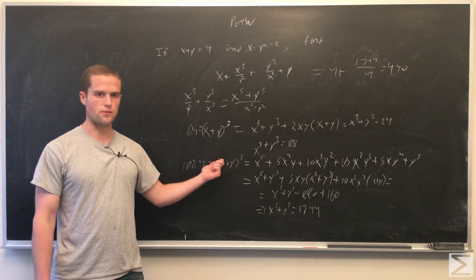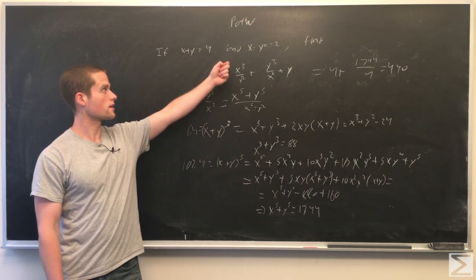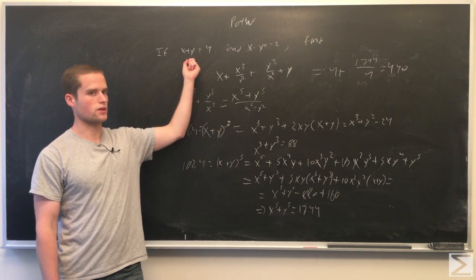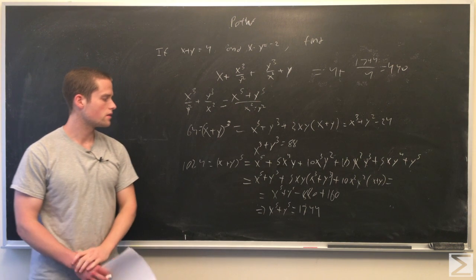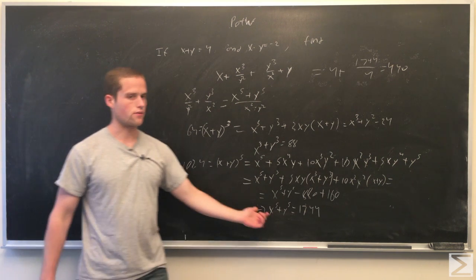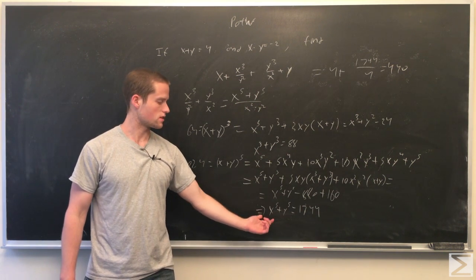So all this was taking powers of x plus y and using x times y equals minus 2, x plus y equals 4, and doing some algebra. So now we have our sum of powers of fifths, and this is really what we needed.